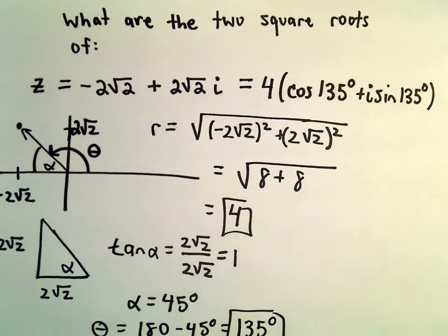And then we'll have cosine of 135 degrees plus i sine of 135 degrees. Okay, so now we're going to use this polar form to actually go about finding the roots.